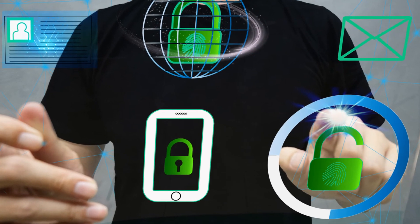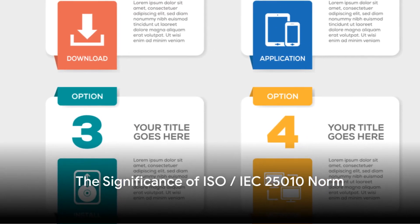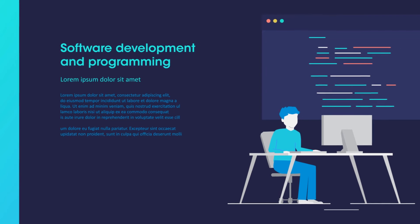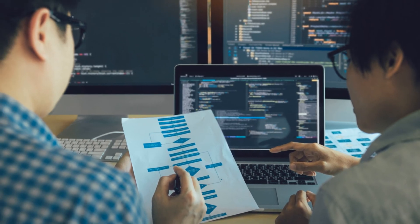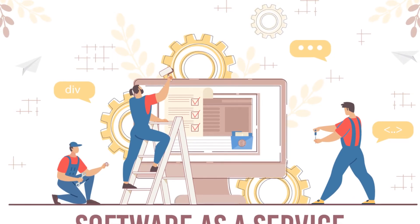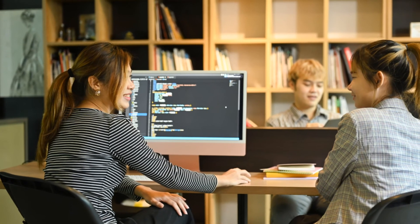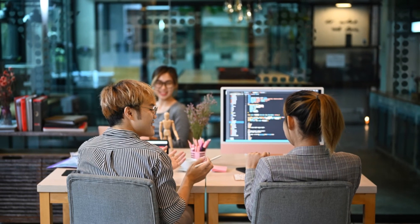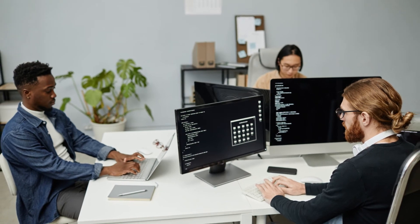To sum it all up: maintainability allows us to keep our software up to date and in tune with user needs and technological changes; portability gives our software the flexibility to adapt to different environments; and security ensures our software is a safe and trusted platform for users. Each of these characteristics plays a crucial role in determining software quality. Now, what does all this mean to you? Let's dive into the practical implications of the ISO IEC 25010 norm. Imagine you're a software developer or a quality analyst — you're not just creating code or testing it. You're crafting experiences, solving problems, and meeting user needs.